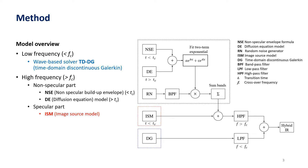Then for the high frequency parts we actually have two parts: a non-specular part and a specular part. The non-specular part is built up out of a non-specular build-up envelope, which will be explained later, and the diffusion equation model which is used after the transition time. The transition time is the point where the sound field is diffuse enough to be represented by the diffusion equation model. The specular part of the high frequency range is done by the image source model.